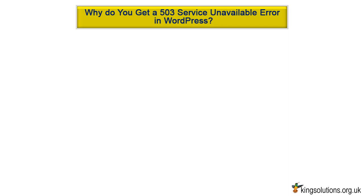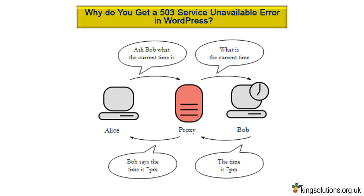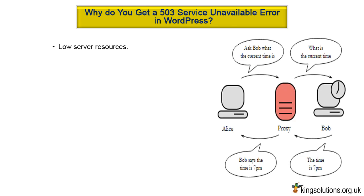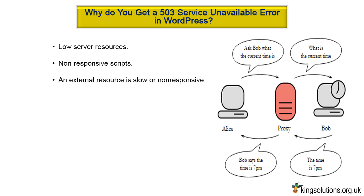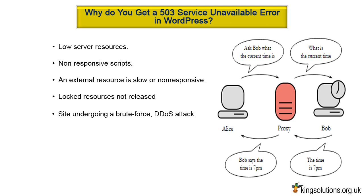Why do you get a 503 service unavailable error in WordPress? The error occurs when the website cannot connect to a proxy server, or the connection itself times out. The most common reasons include: low server resources — the resources offered by WordPress hosting companies for each account are not infinite, and if the limit cannot handle heavy usage, a 503 error results. This is particularly prevalent on shared hosting. Other causes include scripts taking too long or being non-responsive, an external resource like a web service or database being slow, a programmatic error preventing locked resources from being released, or the site being under attack — possibly a brute force DDoS attack.